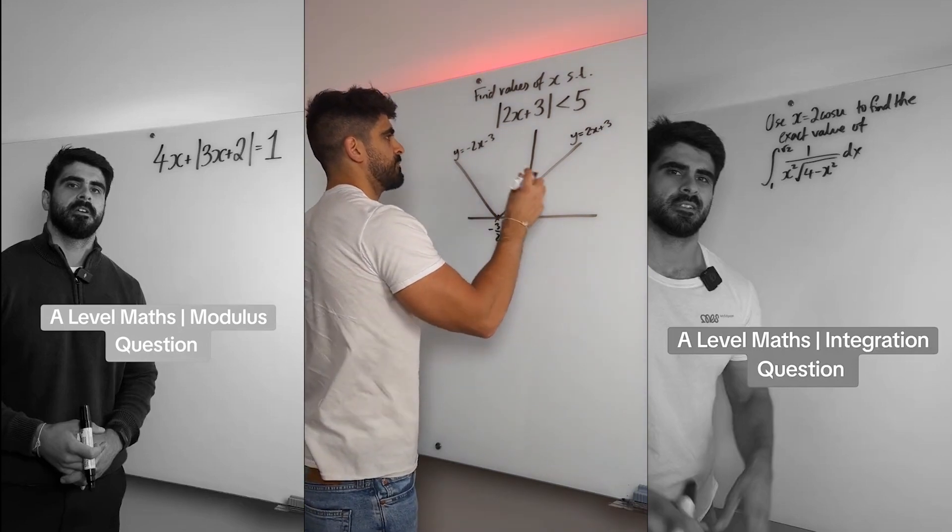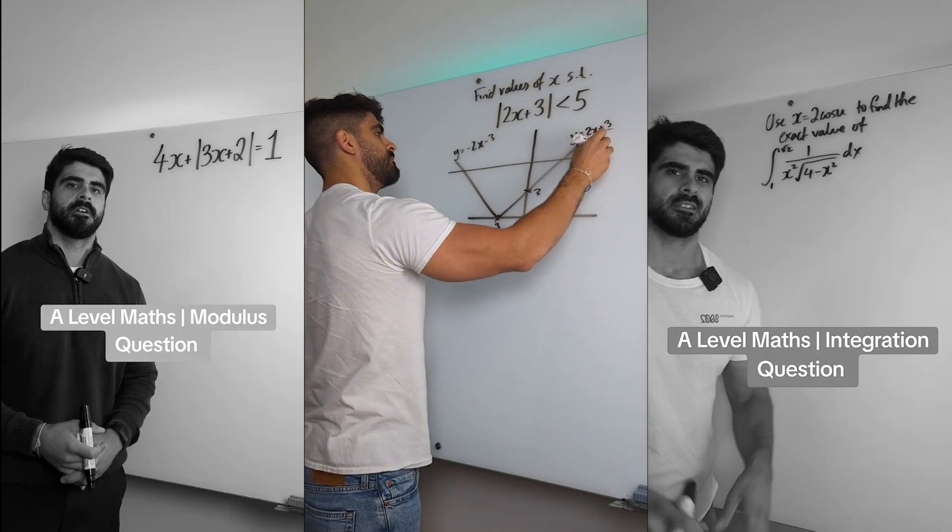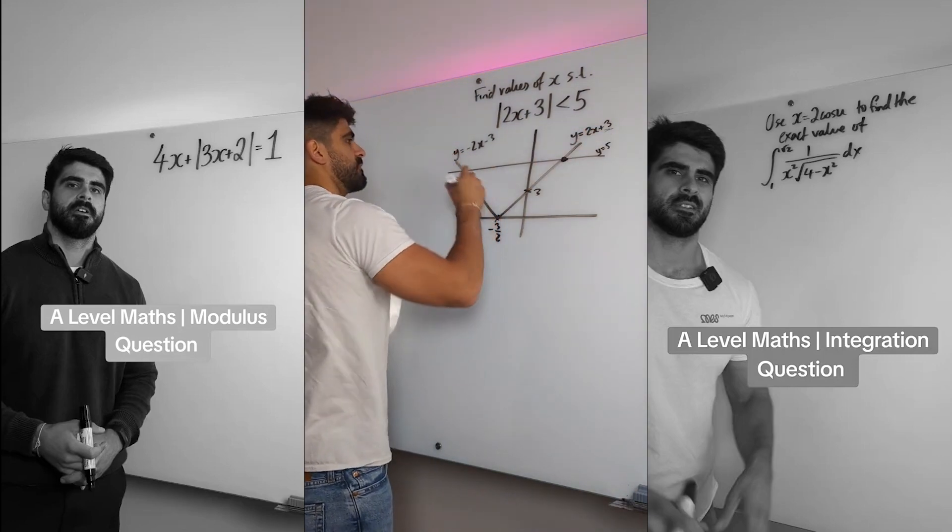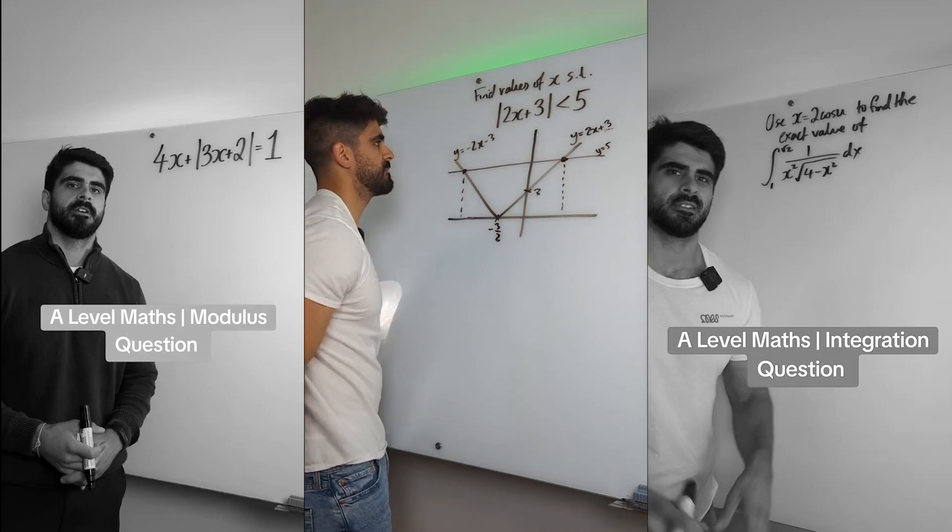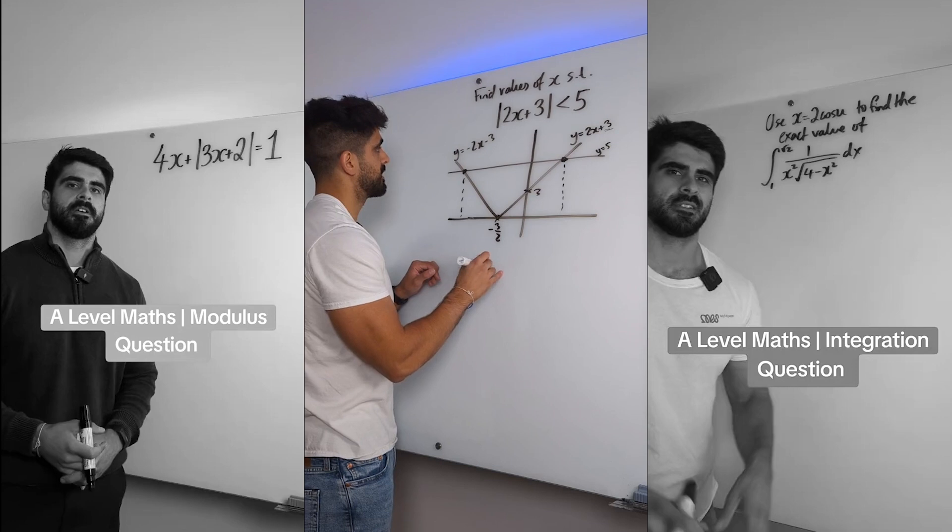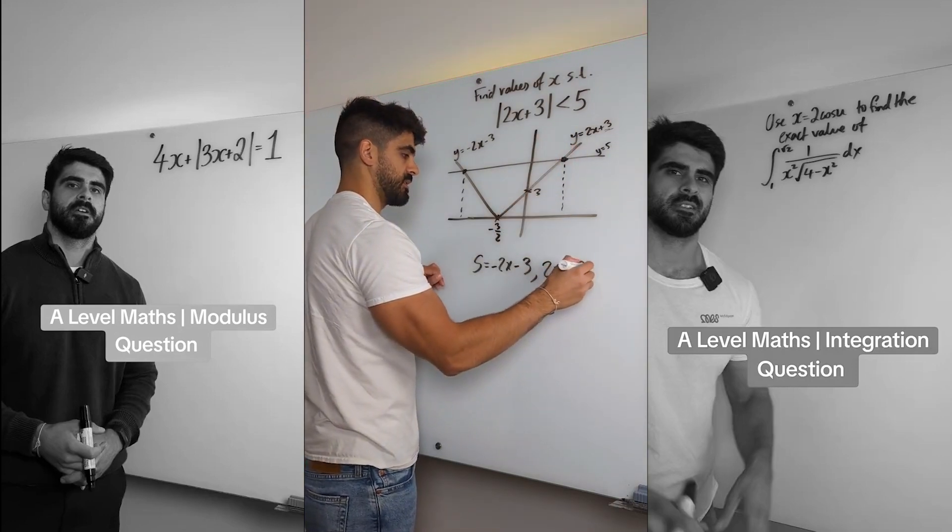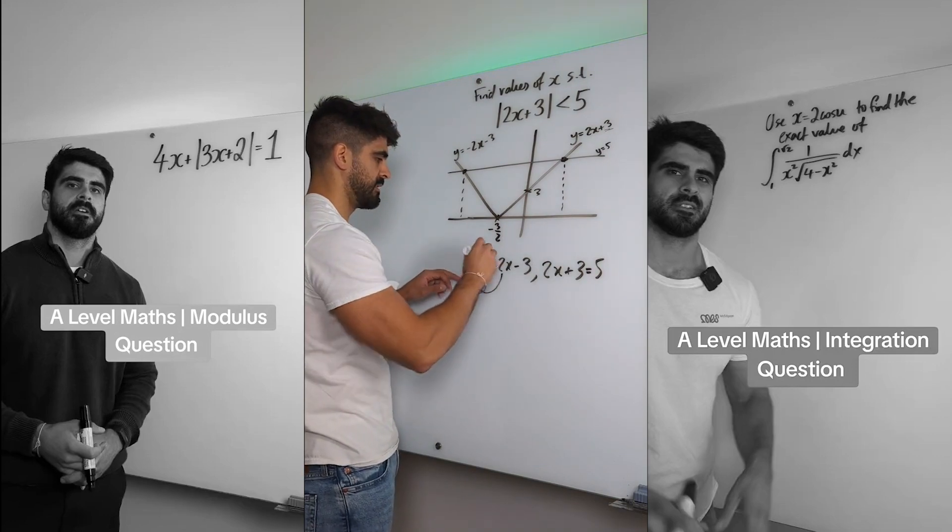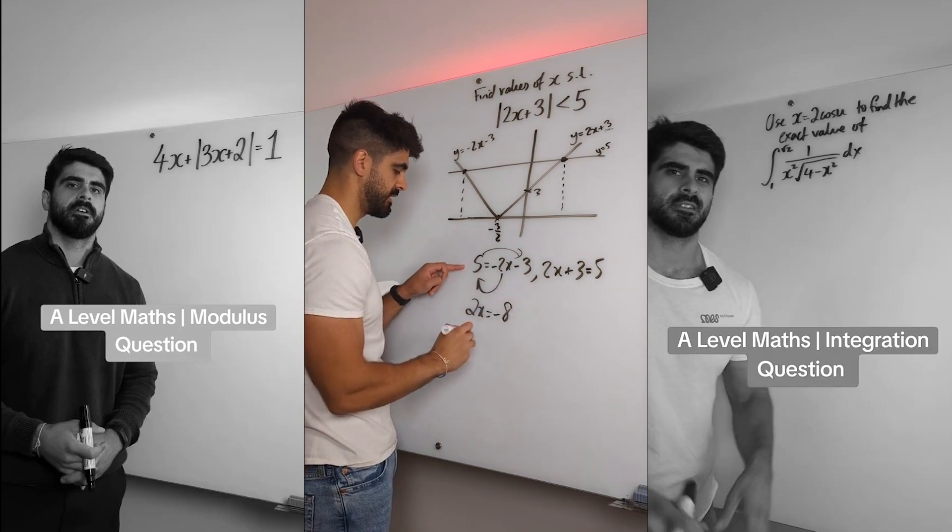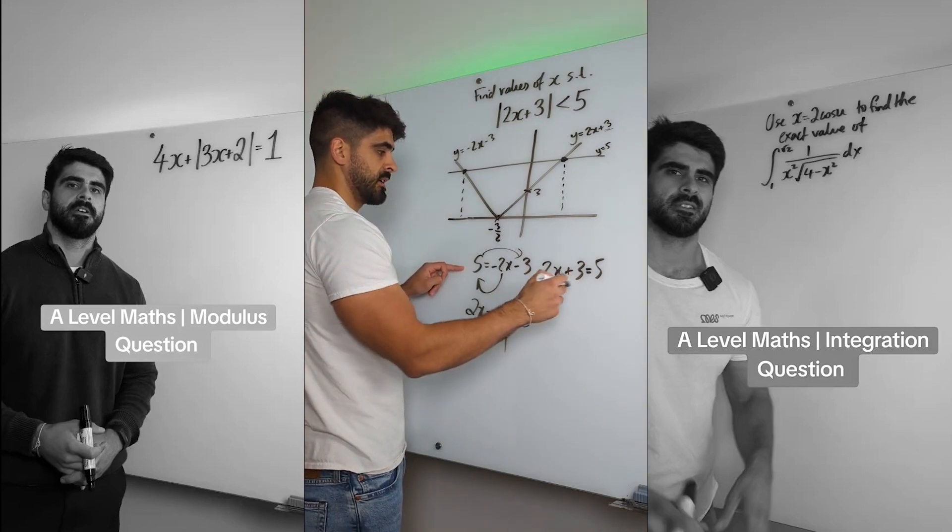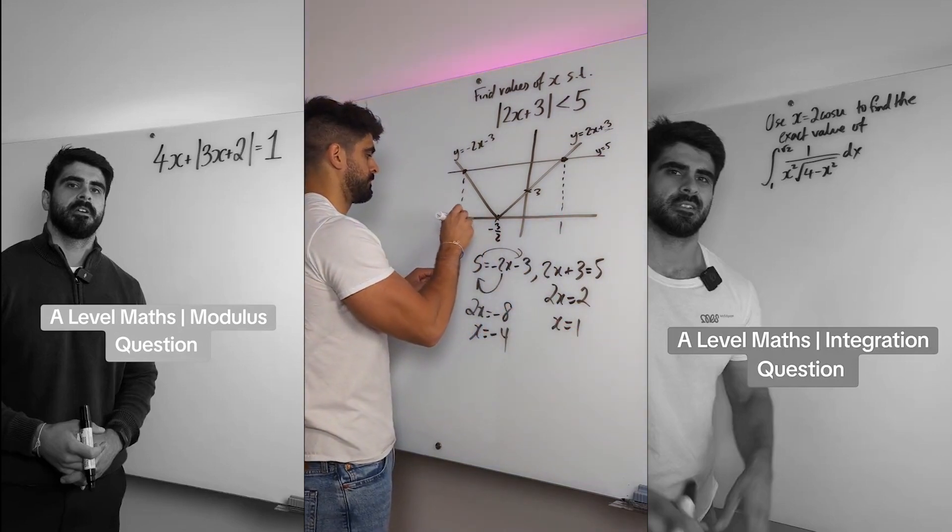This part of the line is obviously 2x plus 3 because it's a positive gradient. This part has a negative gradient, so it's the negative of this. The modulus took all the negative parts of the line and reflected it up. So this would be y is minus 2x minus 3. This crosses the y-axis at 3, and then 5 is over here.